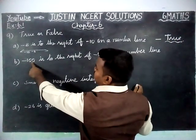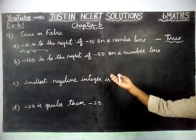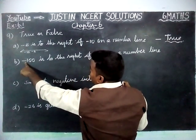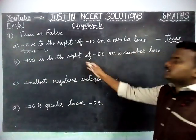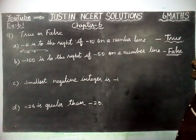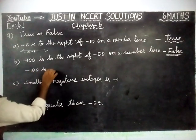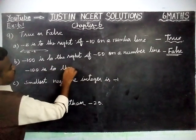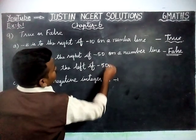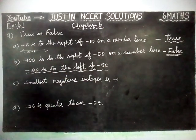Part B: minus 100 is to the right of minus 50 on a number line. That is false. Because when a negative number is larger in magnitude, its value decreases, so minus 100 will come on the left-hand side. The correct statement is: minus 100 is to the left of minus 50 on a number line.